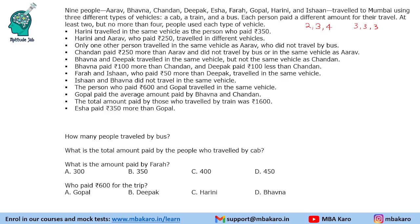Now we need to find the vehicles — that is cab, train, and bus — and we need to find the amount that each person paid. So fare and the mode of transport. We will make A, B, C, D, E, F, G, H, I the initial letters of their names, and we will write the fare and the mode of transport.